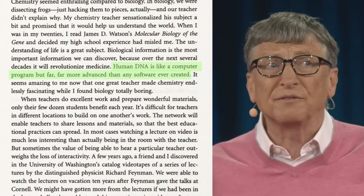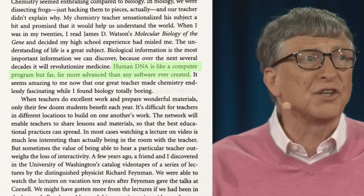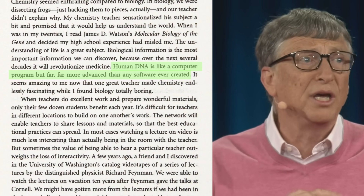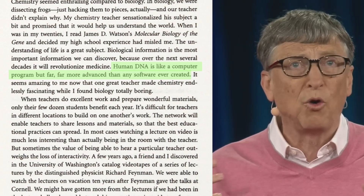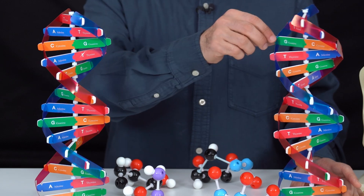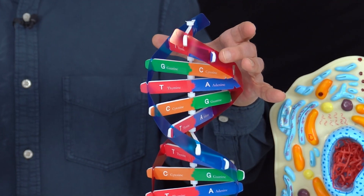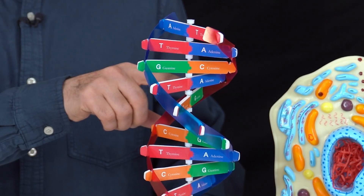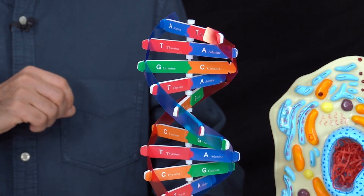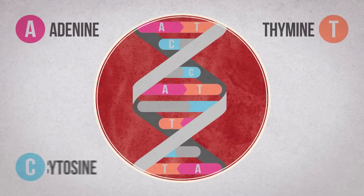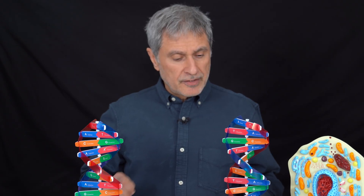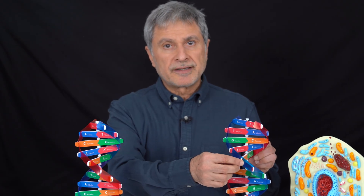Human DNA is like a computer program, but far, far more advanced than any software ever created. These are DNA models. Each of these is called a nucleotide. Here we have adenine, thymine, guanine, and cytosine. There are 3 billion genes in the human gene map like these.